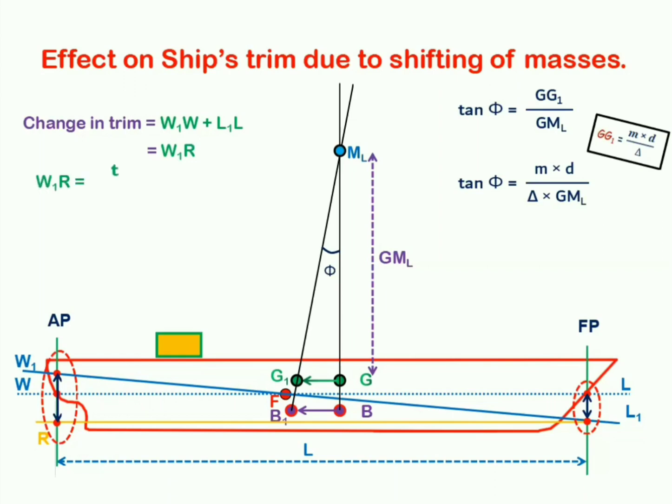W1R can now be expressed as t upon 100, where t is the change in trim all along ship's length in centimeters. Well, why exactly we are doing so? Just because the change in trim usually remains of a smaller value. Expressing the same in meters is not convenient for us. So, it is of more use if we express the same in centimeters.